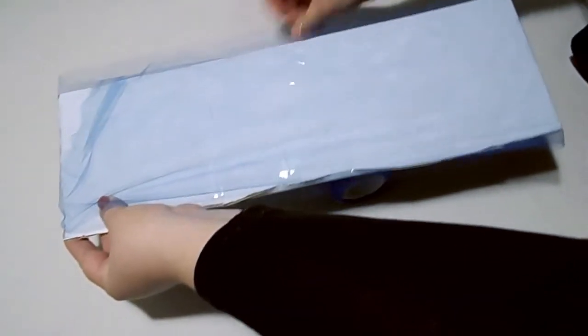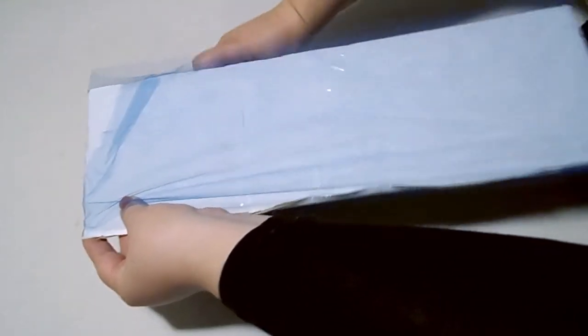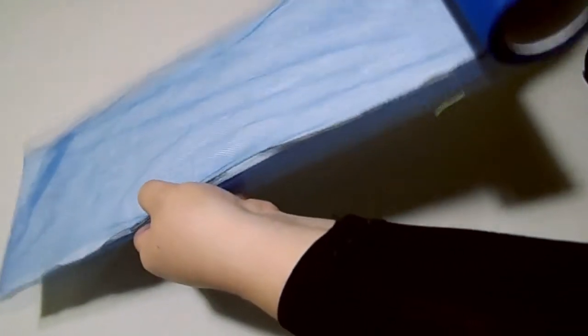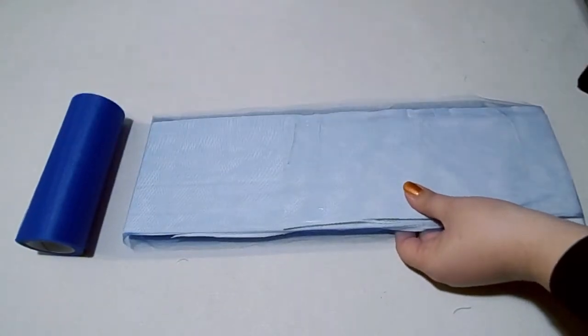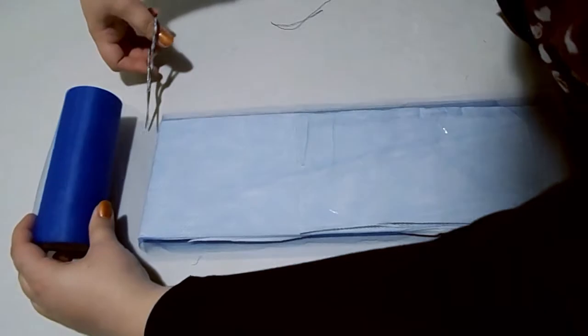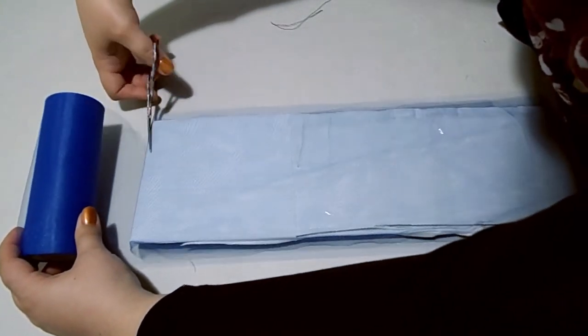You wrap it around however many times that you need to get the right amount of tulle that you need for your tutu. Then when you've got enough, trim your tulle from the roll.